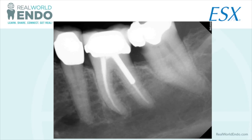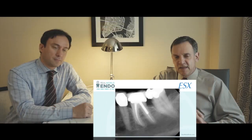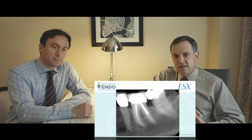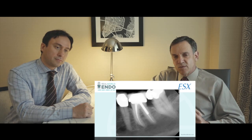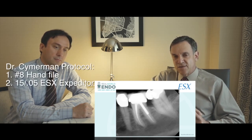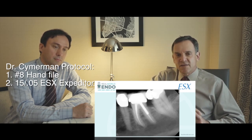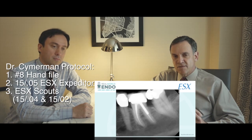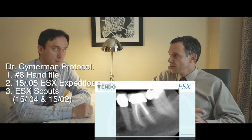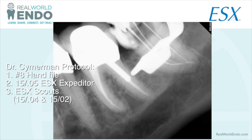In this case, we used the ESX file. We did our access, opened up the tooth, and the roots were pretty curved — they all joined in the apical two millimeters. Initially, I could only get an 8 file down to the apical area. So I explored first with the number 8 file, then used the 1505 ESX file and got about two-thirds of the way down. This was an advanced case, so we used the ESX scout files, which are 15 files with 04 and 02 taper. I used a 1505, then a 1504, then a 1502, and by the time I used the 1502, I was able to get down all three canals. Then I went back to the 1505 and was able to get that all the way down.